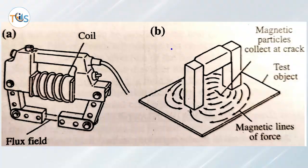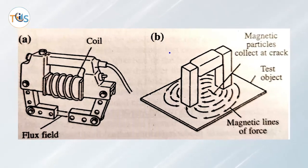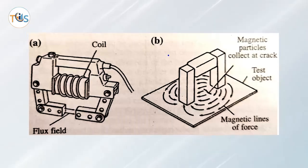Yoke Technique. A yoke has an electric coil in the unit creating a longitudinal magnetic field that transfers through the legs to the examined part.